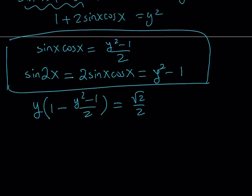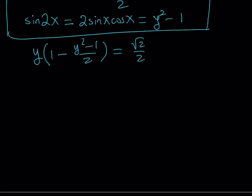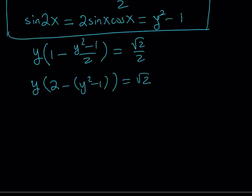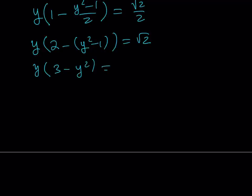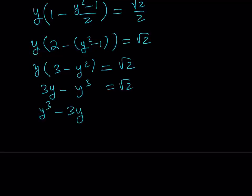This is not going to be quadratic — it's going to be a cubic equation. Multiplying both sides by 2 gives y times (2 minus y squared plus 1) equals square root of 2. That simplifies to y times (3 minus y squared). Distributing gives 3y minus y cubed equals square root of 2. Putting everything on the same side: y cubed minus 3y plus square root of 2 equals 0.